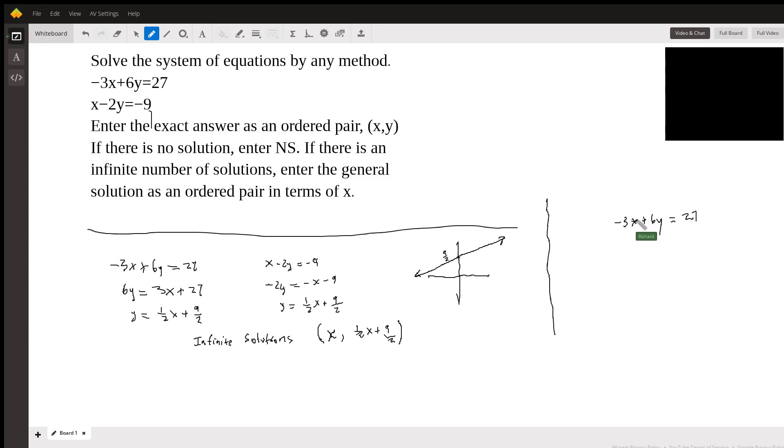And then the bottom, sorry, that got smudged. Let's multiply the bottom one by three. So we're going to have three x minus six y equals negative 27. And if you add these together, you get zero equals zero.